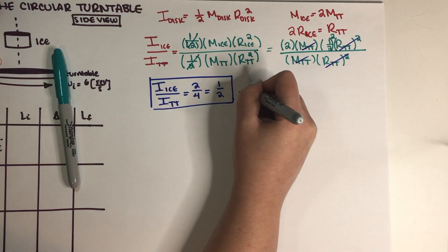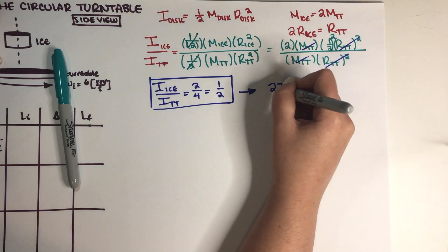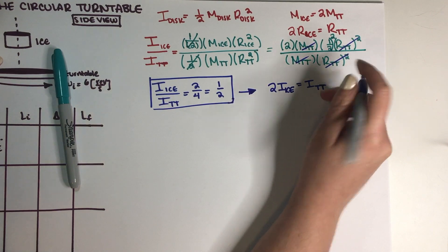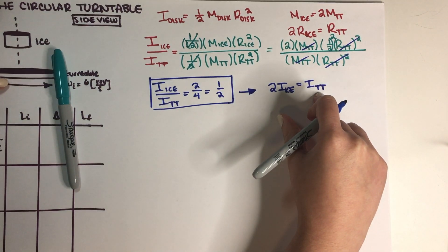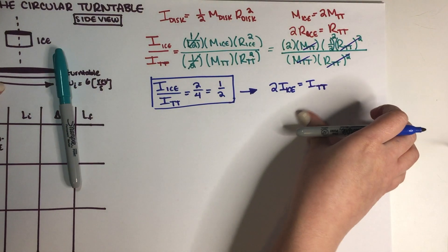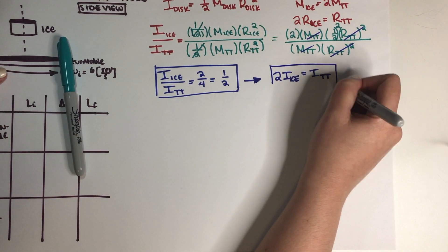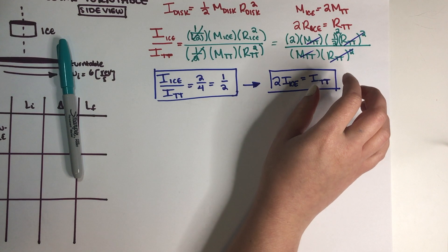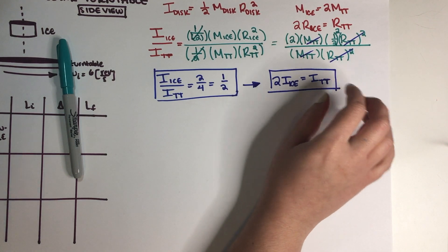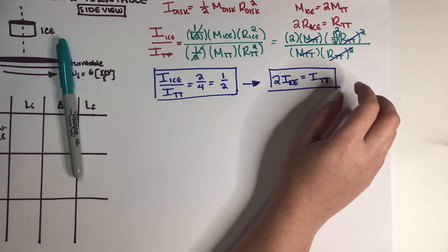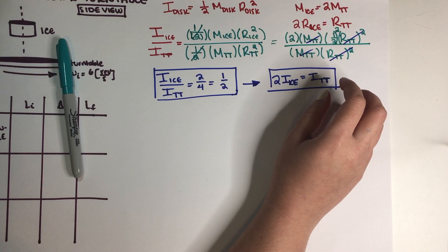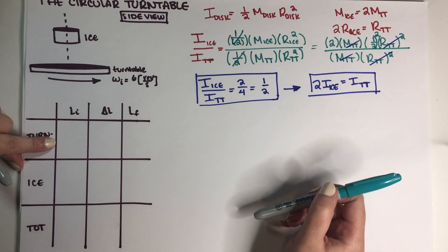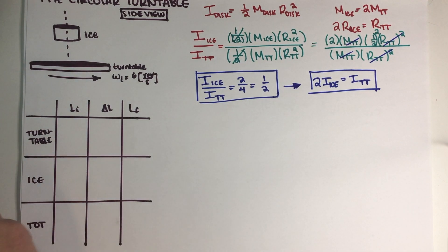This means the turntable has double the rotational inertia of the cylinder of ice. For Part B, we'll use an angular momentum chart, which will be very useful to compare the torque vectors — magnitude and direction — on the cylinder and on the turntable while they are skidding.